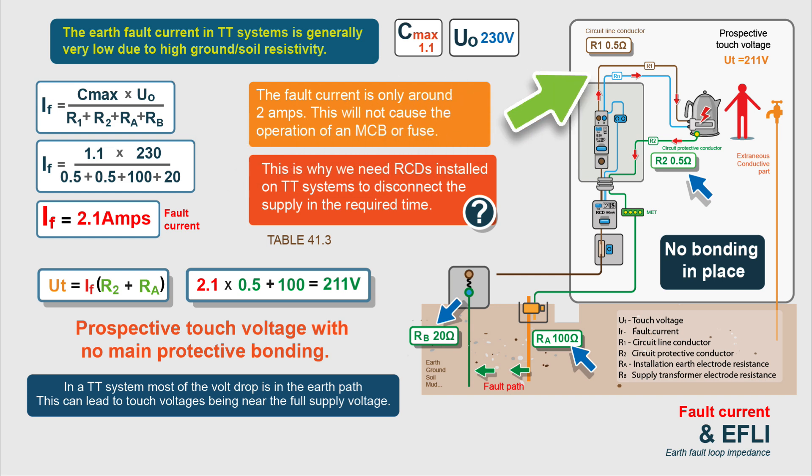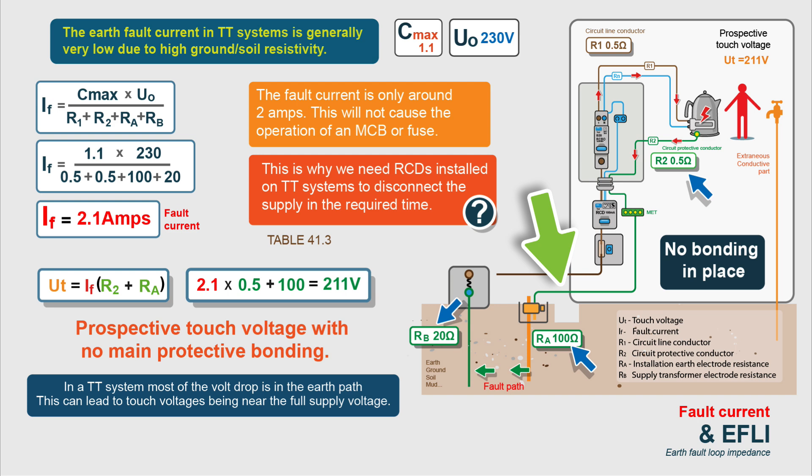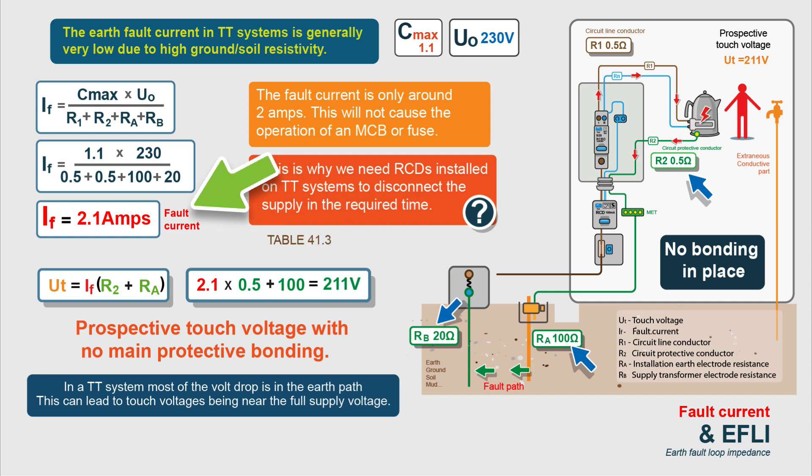R1 is the resistance or impedance of our line conductor from the RCD to the kettle. R2 again is the CPC. RA is the impedance of our electrode and RB is the impedance of the transformer electrode. We do the maths and we get a fault current of 2.1 amps. 2.1 amps is a very low fault current — that won't trip the MCB or RCBO, so we haven't got our disconnection time. Remember, this is earth faults, not short circuit faults. This is why we have RCDs for fault protection.